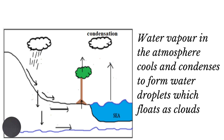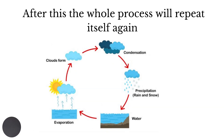Water vapor in the atmosphere may cool and condense to form water droplets which float as clouds. This is the process of condensation. After this, the whole process will repeat itself again.